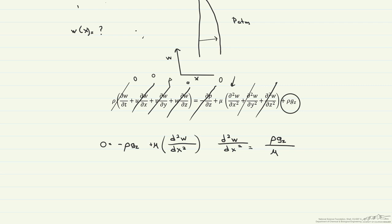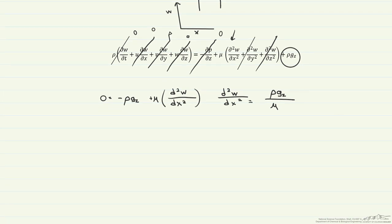So to find our velocity profile, we'll need to integrate this expression twice. So we start with dw dx is going to be equal to rho g sub z mu x plus c1. There's our first constant. And then we integrate it again so that we get our w of x, which is going to be equal to rho g sub z divided by 2 mu x squared plus c1 times x plus c2.